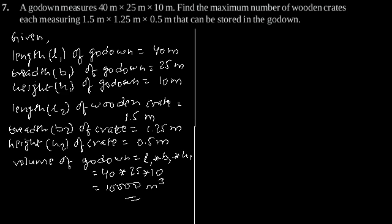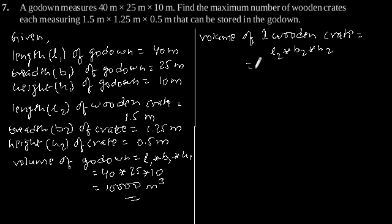Now, volume of one wooden crate is equal to L2 × B2 × H2, which gives 1.5 × 1.25 × 0.5, which is equal to 0.9375 cubic meters.